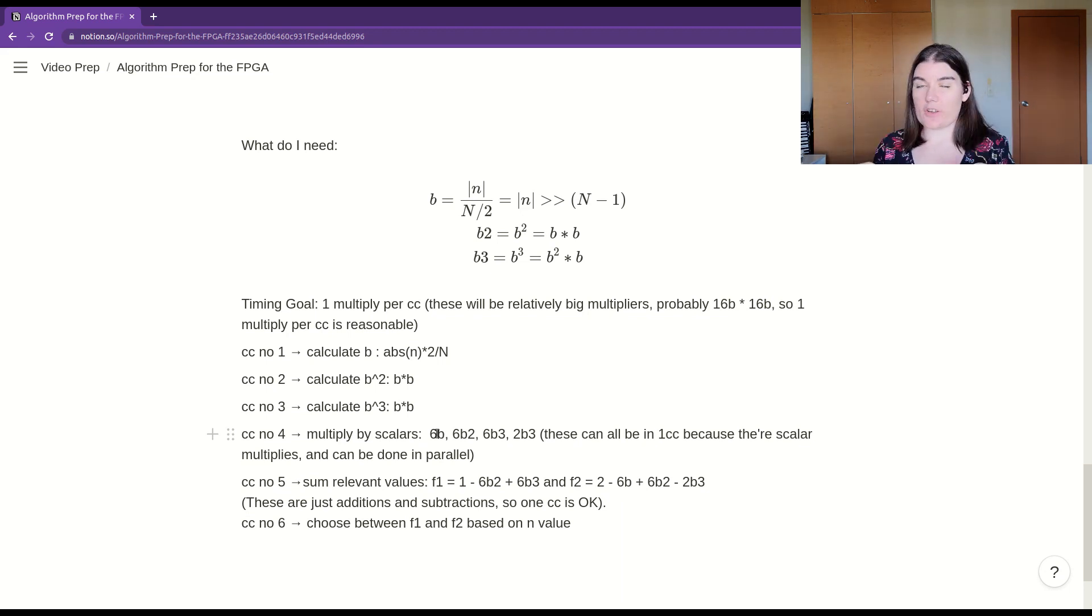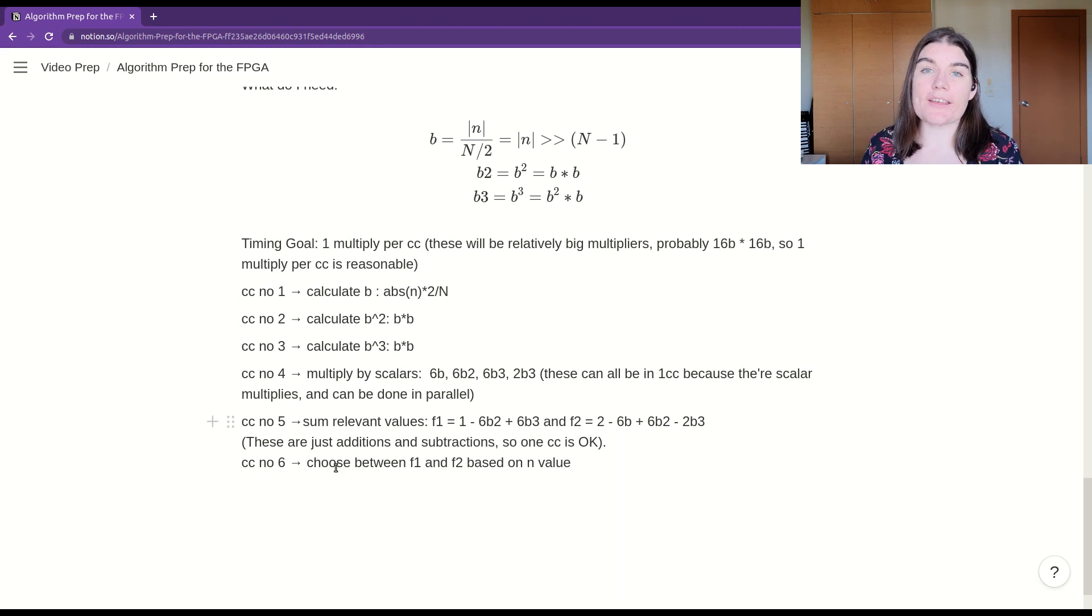And then the next clock cycle, I'm going to build my formulas: 1 - 6B² + 6B³, and 2 - 6B + 6B² - 2B³. I'm going to build my polynomials together and create the final two values, the one case result and the other case result. And then on the sixth clock cycle, I'm going to choose between my result one and my result two, depending on the case.